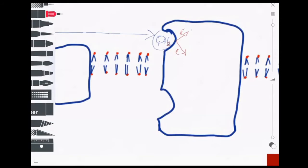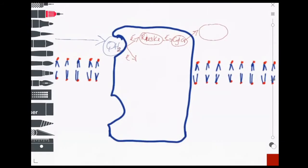One electron is sent to an iron-sulfur cluster within a protein known as the Rieske protein. The Rieske protein in turn passes the electron on to a protein known as cytochrome c1. Cytochrome c1 then passes the electron to a water-soluble protein known as cytochrome c, which does not have a fixed position in the membrane like Complex III.